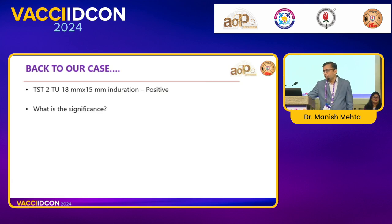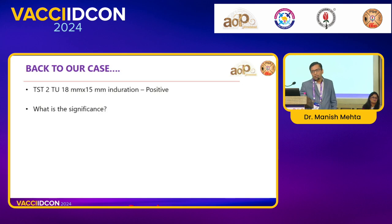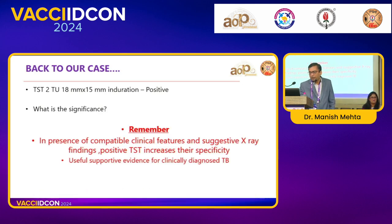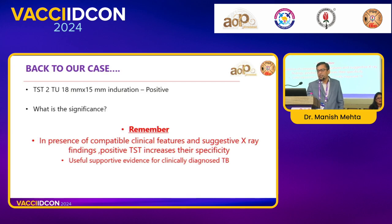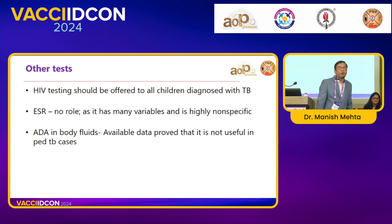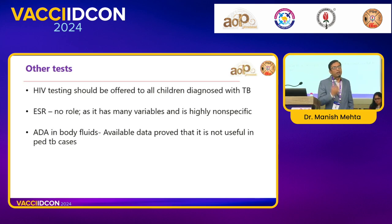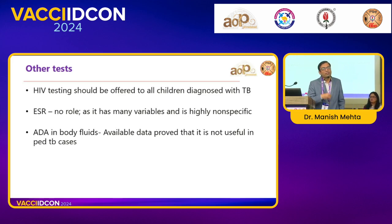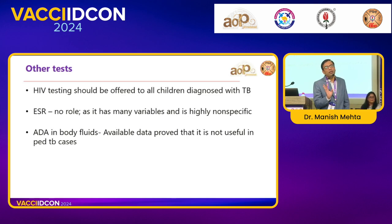In our patient, TST showed 18 by 15 mm induration — positive. With compatible clinical features and suggestive X-ray findings, a positive TST increases specificity and is useful supportive evidence for a clinically diagnosed case of tuberculosis. Other tests: always perform HIV testing in a case of tuberculosis. ESR has not much role. ADA test in pleural fluid — forget this test. It is high in many other infections also, so performing ADA test in pleural fluid has no meaning.